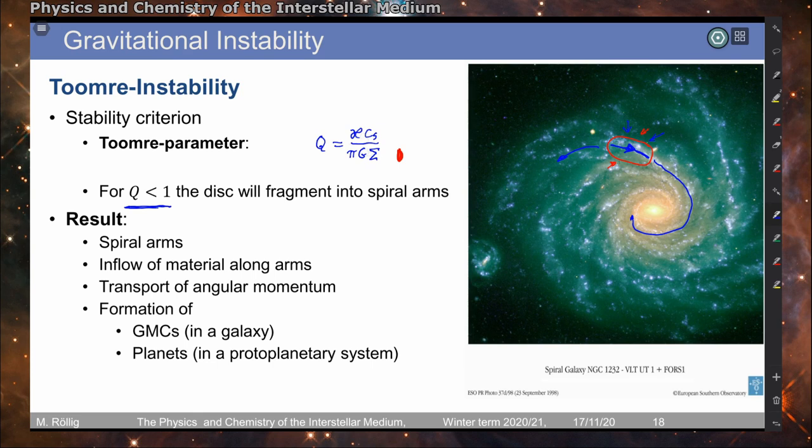And this instability in our disks, these Toomre instabilities, form basically then giant molecular clouds in a galaxy. But they also act on smaller scales because we also find rotating disks of gas in the formation of stars, so protoplanetary disks. And in these disks, these instabilities lead to the formation of planets. But the physics is exactly the same.